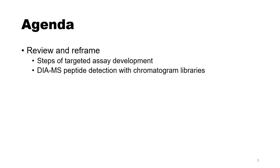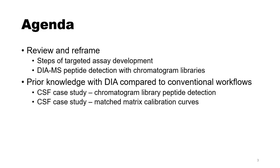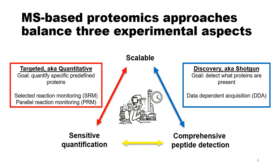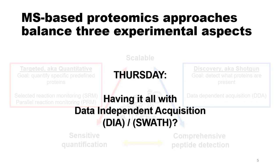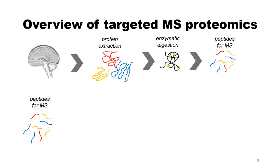On the agenda, first we're going to do a little bit of reviewing and reframing. Then we're going to talk about prior knowledge with DIA compared to conventional workflows, so throughout this you're going back in your mind to what you did today versus what you did the past couple of days. I want to remind you we talked about how a targeted or quantitative experiment would be scalable with sensitive quantifications, while a discovery-style experiment might be scalable with comprehensive peptide detection — and today we're going to talk about potentially having it all with data-independent acquisition, or SWATH.